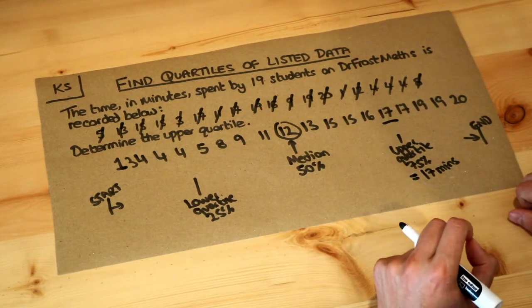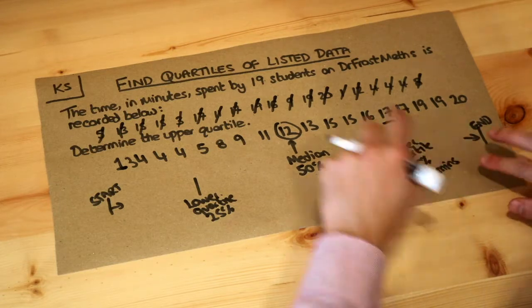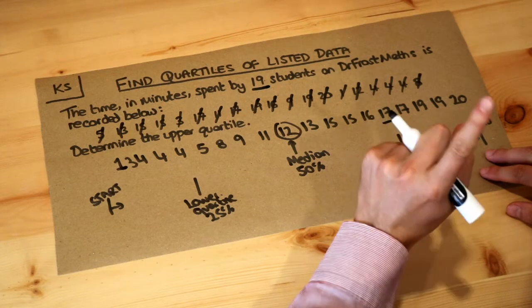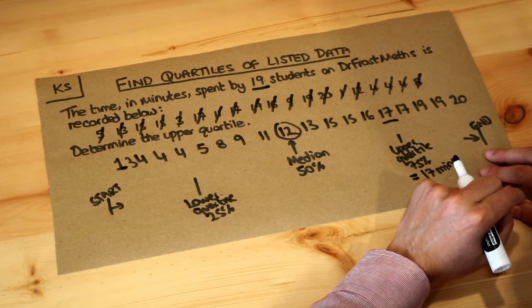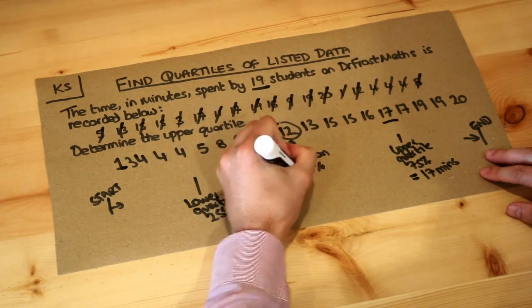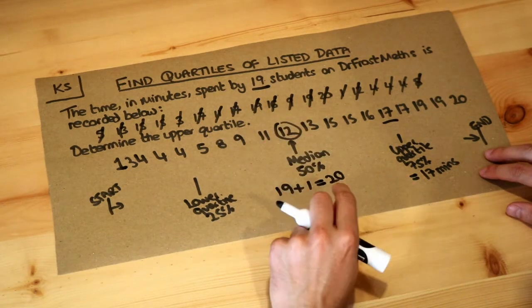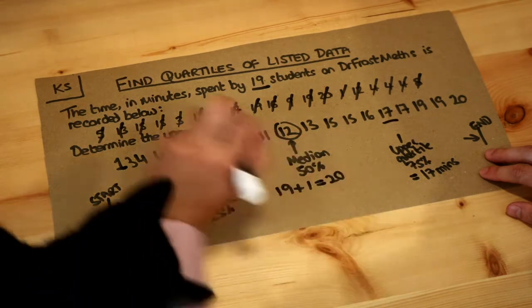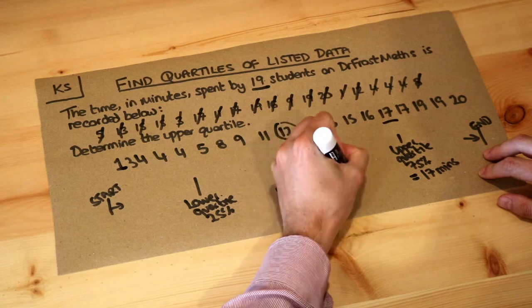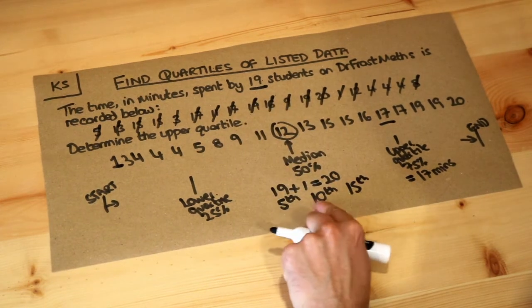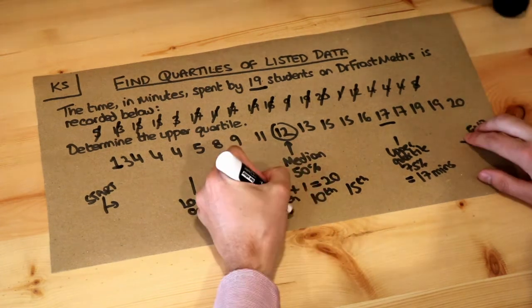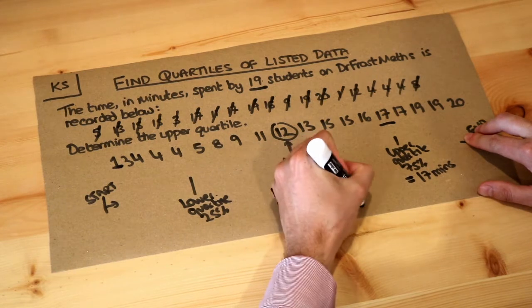Now there is a slightly cleverer way of doing this. This technique will work provided that the number of items you have is one less than a multiple of four. What you do is add 1 to the 19 to get 20, and then find quarters of that 20. A quarter of 20 is 5, so we get the 5th, the 10th, and the 15th item. That in turn gives us the item number for the lower quartile, the median, and the upper quartile.